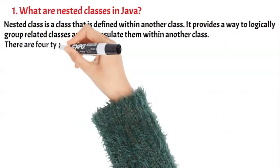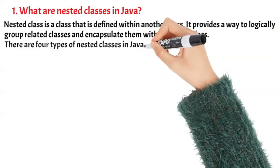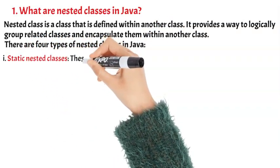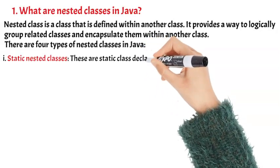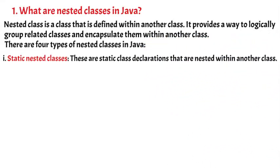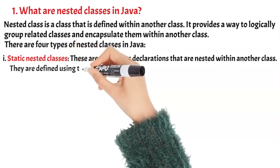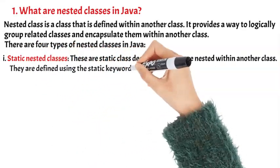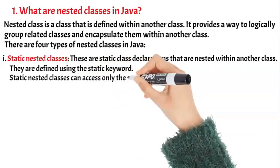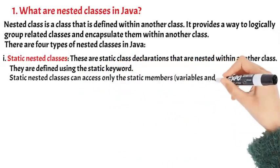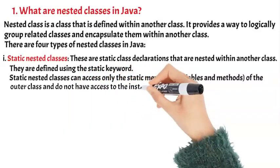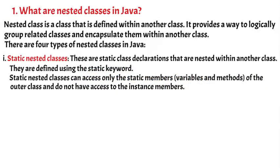There are four types of nested classes in Java. 1. Static Nested Classes: These are static class declarations that are nested within another class. They are defined using the static keyword. Static Nested Classes can access only the static members, variables, and methods of the outer class and do not have access to the instance members.